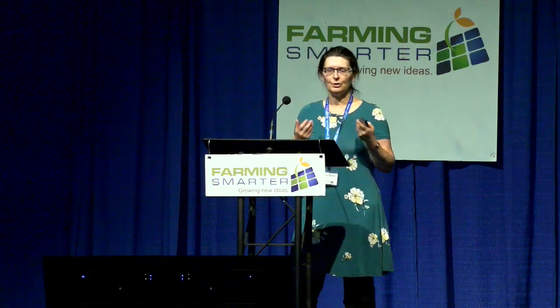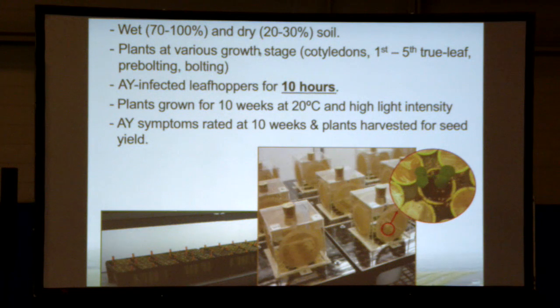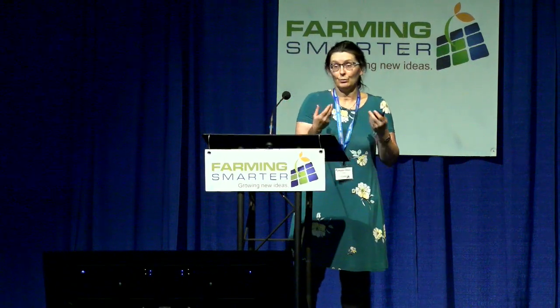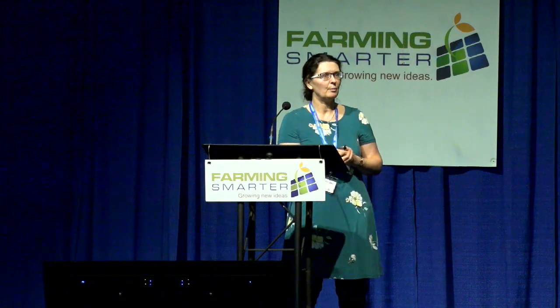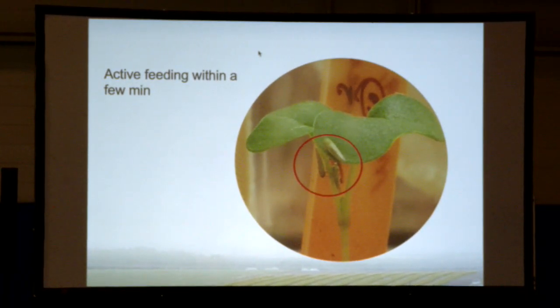To answer these questions, we use bioassays in the lab. The protocol was developed by Bob Elliott, who was working on seed treatments for flea beetles, and we use the exact same bioassay. We grow plants in little cones, put a small cage on top, and place leafhoppers inside. We tested various growth stages and soil moisture — very wet soil and dry soil — and leave the leafhoppers for only ten hours. We then remove the leafhoppers, put plants in the greenhouse, and check with PCR for phytoplasma or wait for symptoms. As soon as we place the leafhoppers, they go onto the canola right away and feed within minutes.